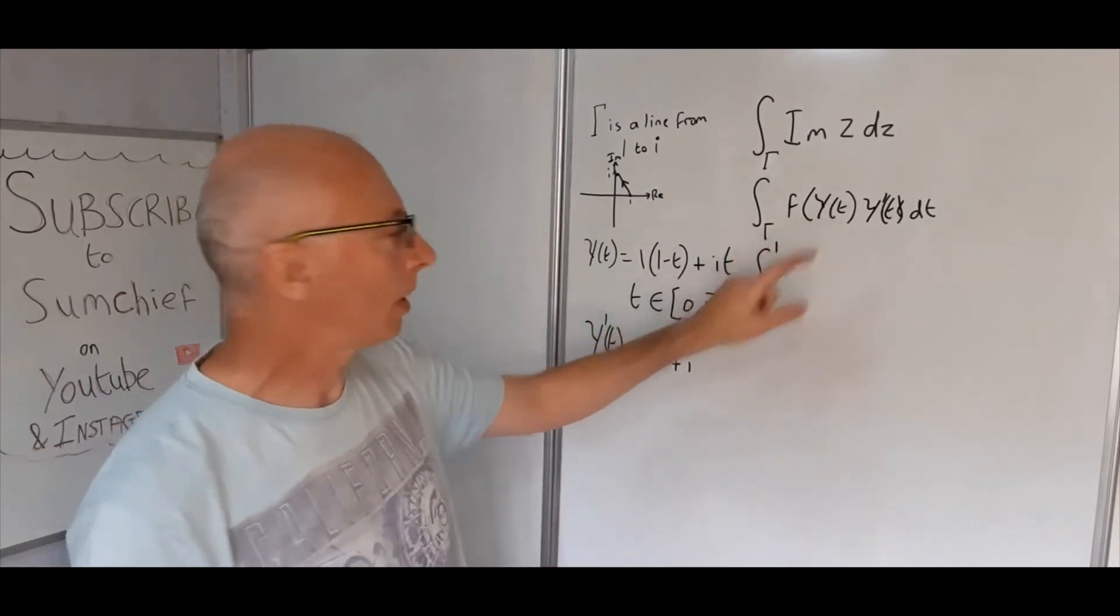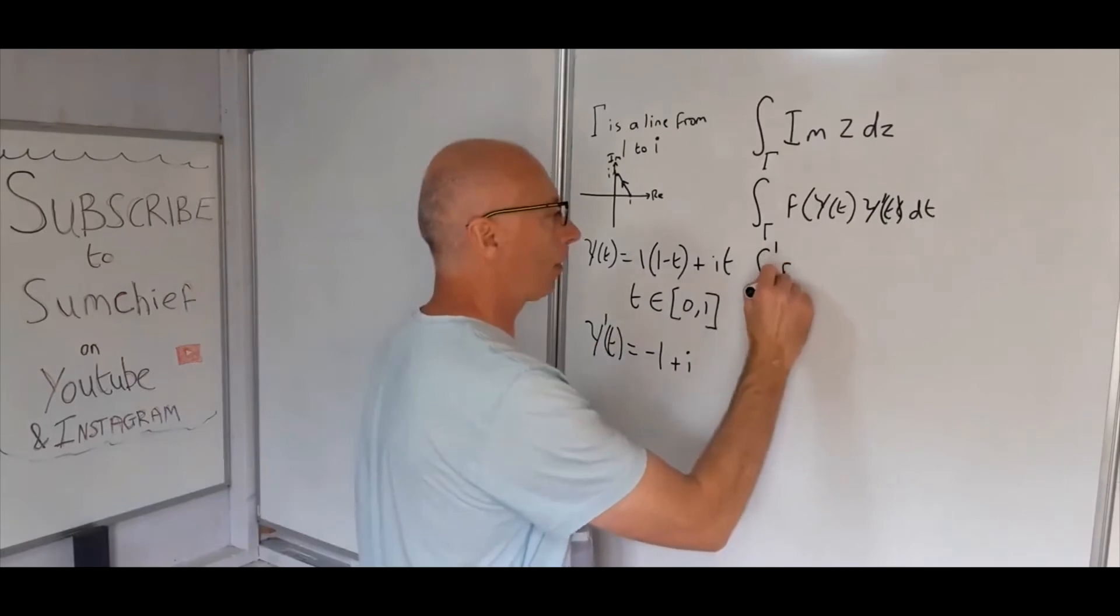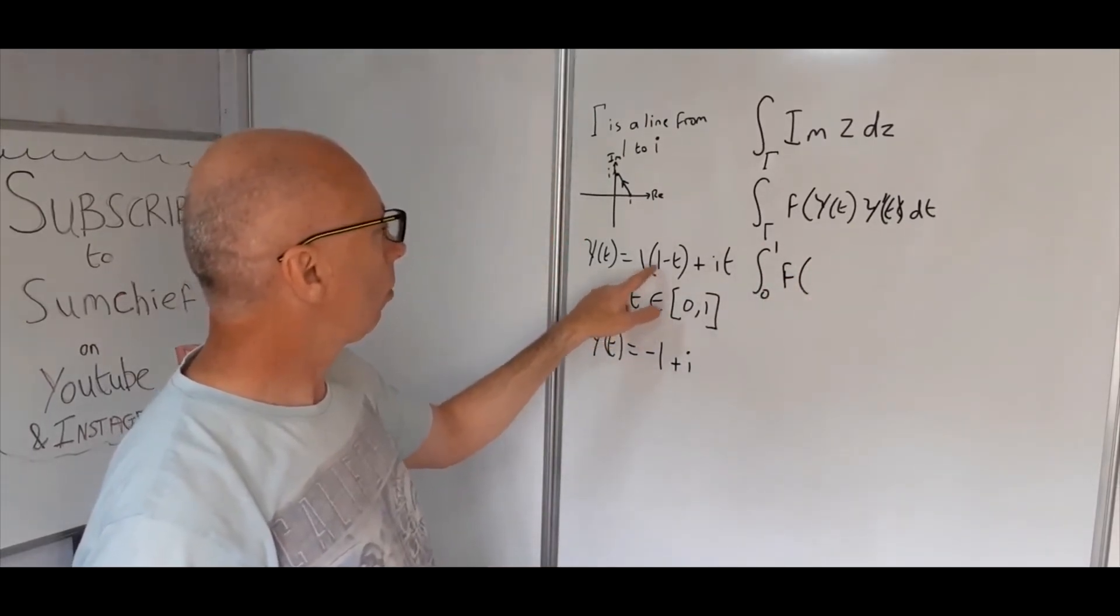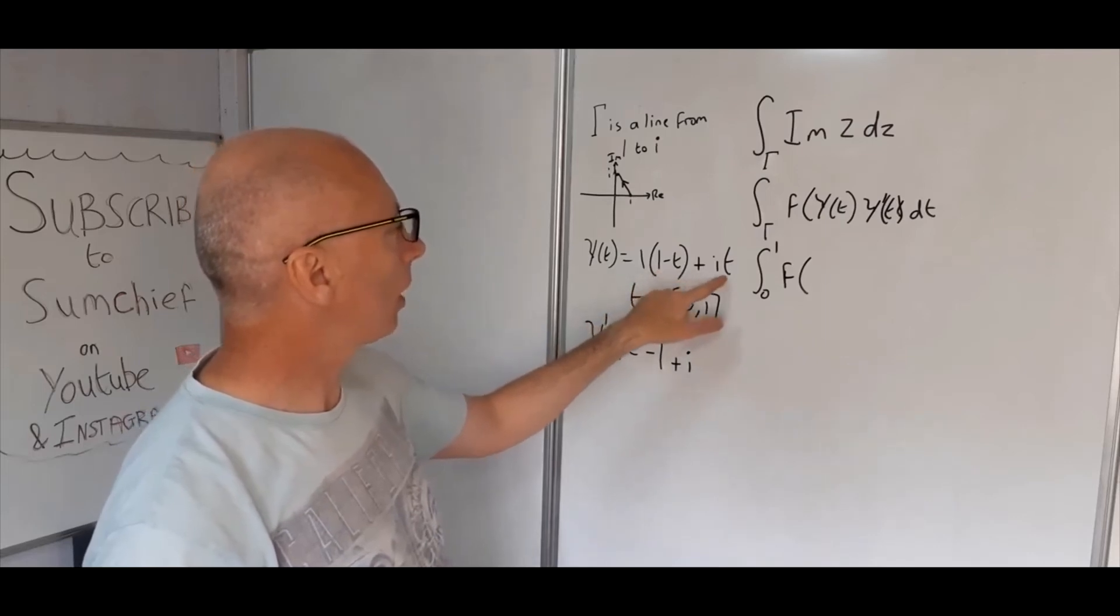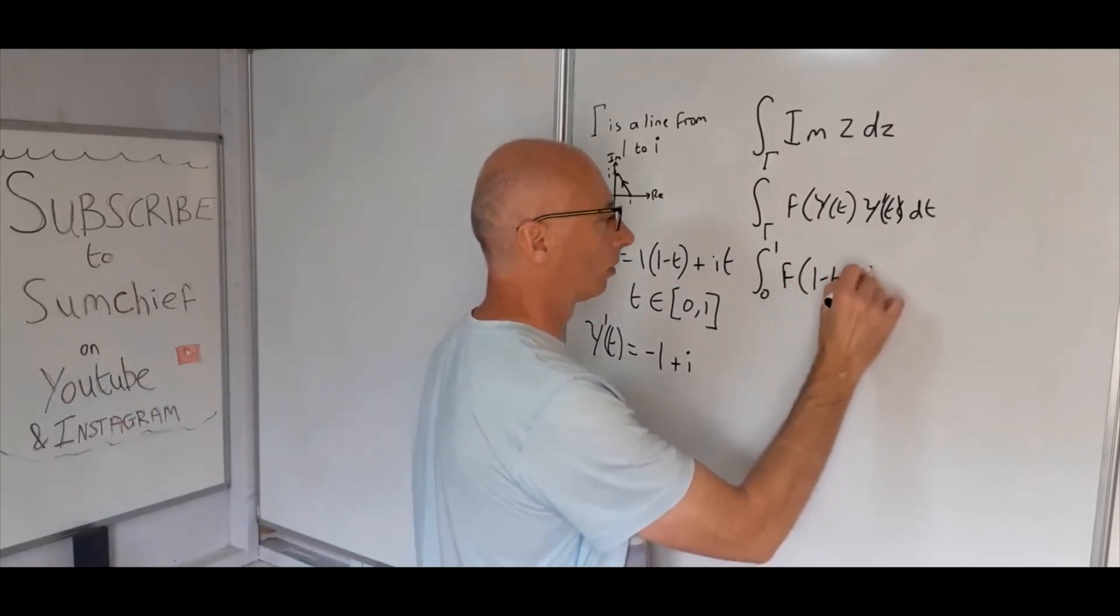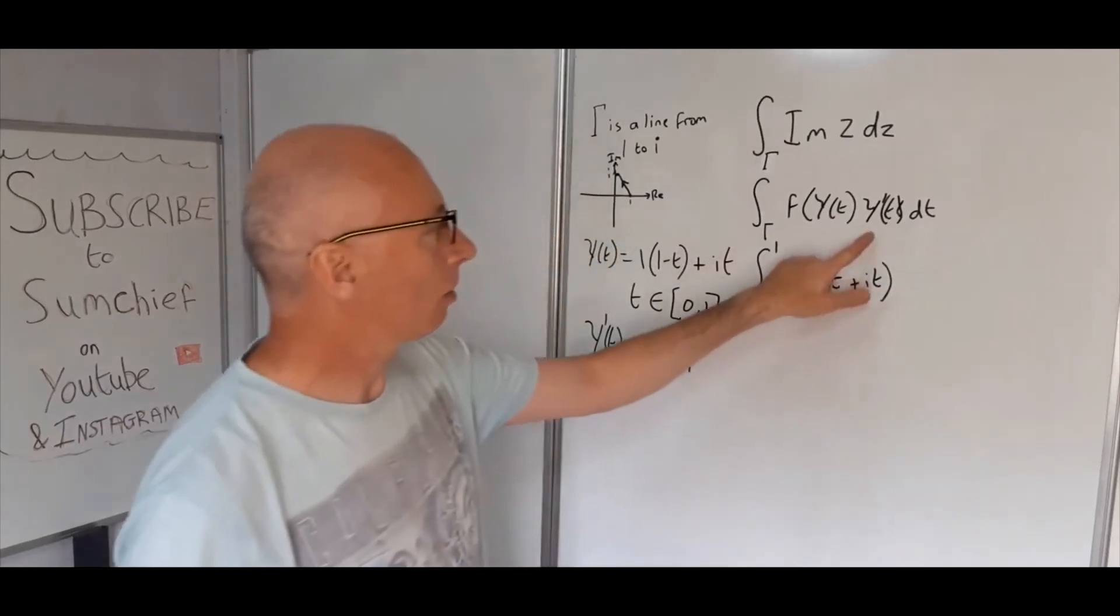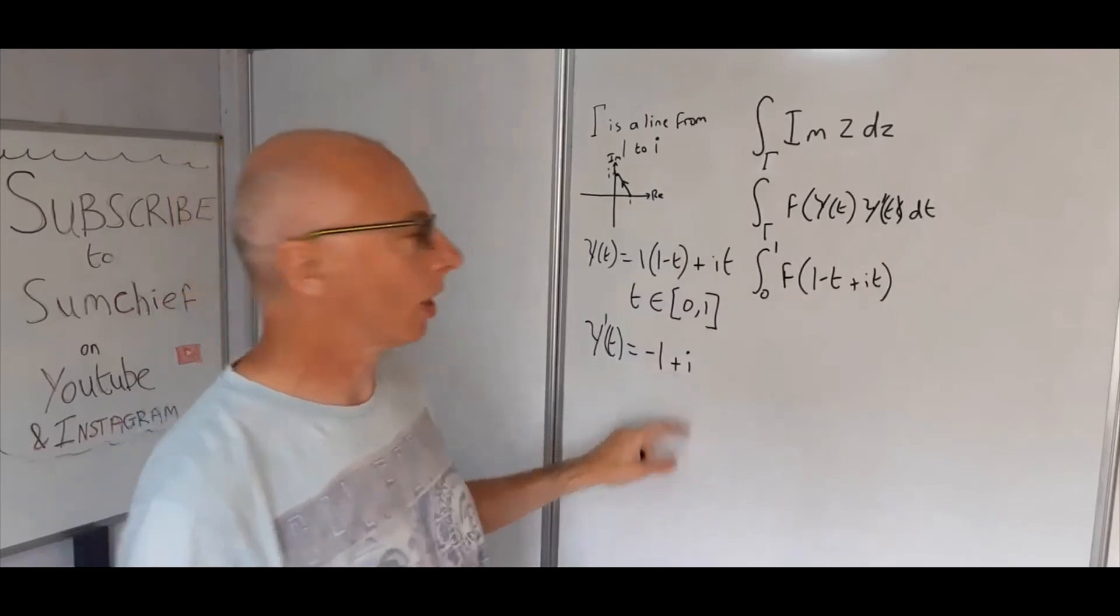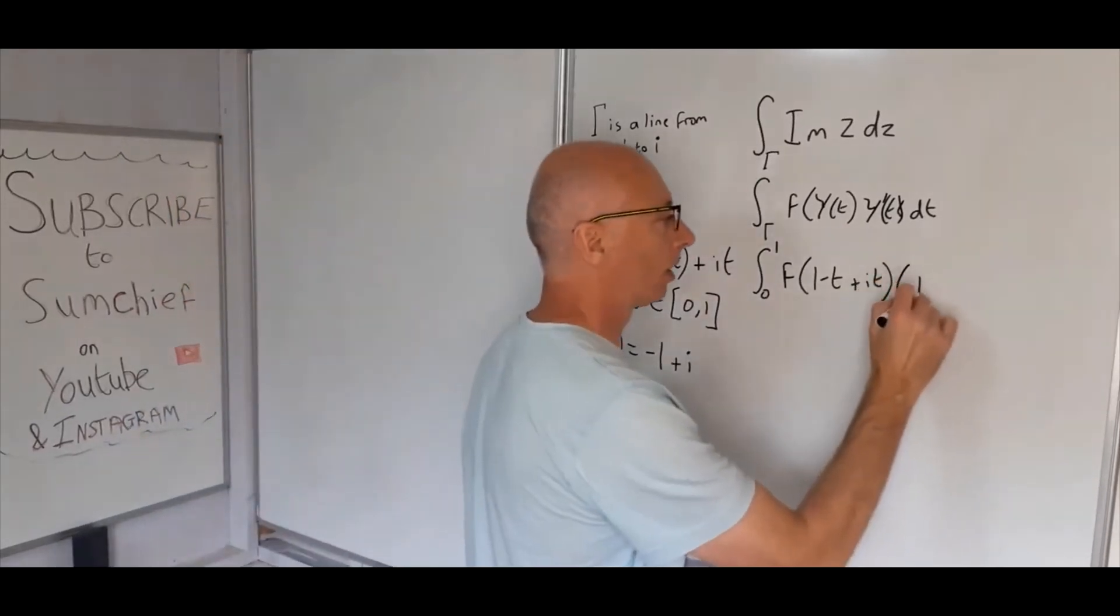f(gamma(t)) is 1 - t + it, and our derivative is -1 + i, and that's dt.